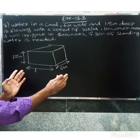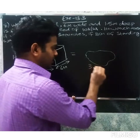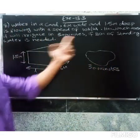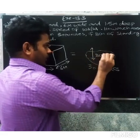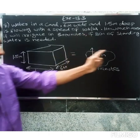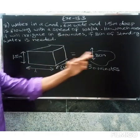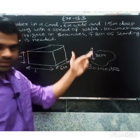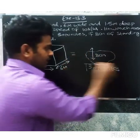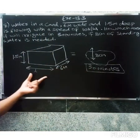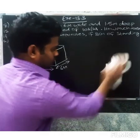We need to find the total area that can be irrigated in 30 minutes, given that 8 centimeters of standing water is needed. So, what area can be irrigated in 30 minutes with 8 centimeters of standing water?